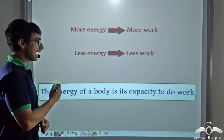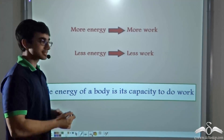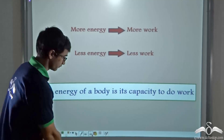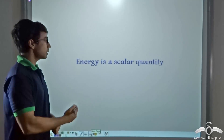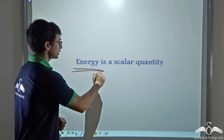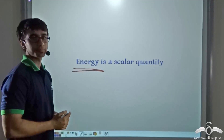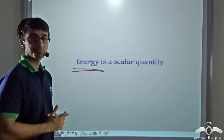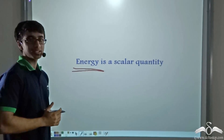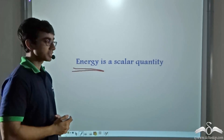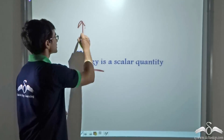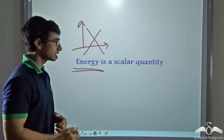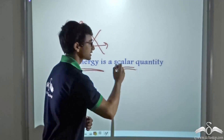We can say that the energy of the body is its capability or its capacity to do work. Now energy, just like work, is also a scalar quantity. It does not matter in which direction the energy is being spent — as long as energy is being spent, it is sufficient for physics, and energy has no direction associated with it. Thus energy is a scalar quantity.